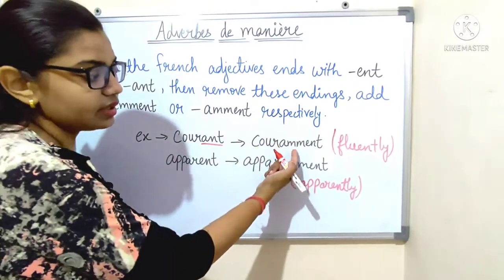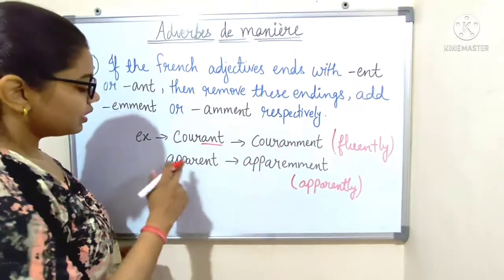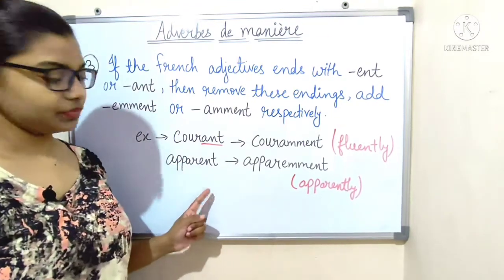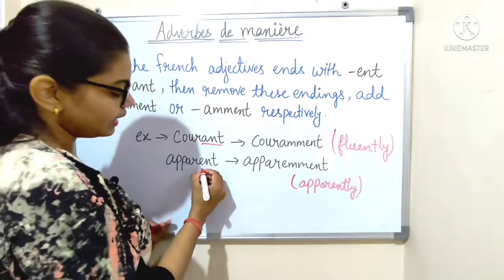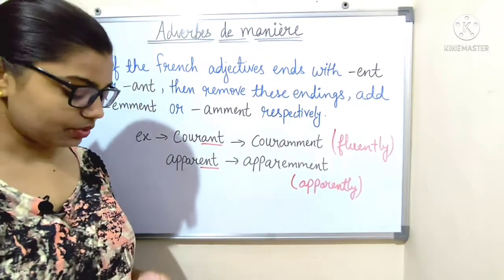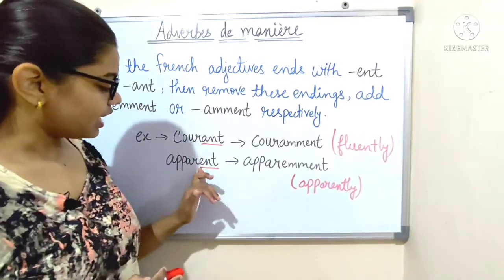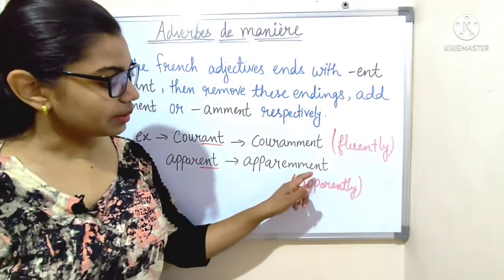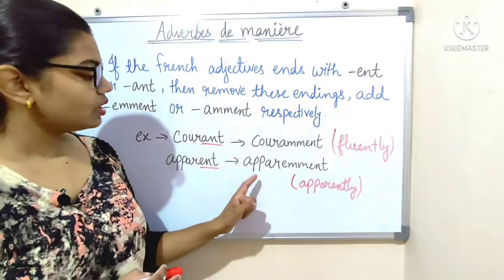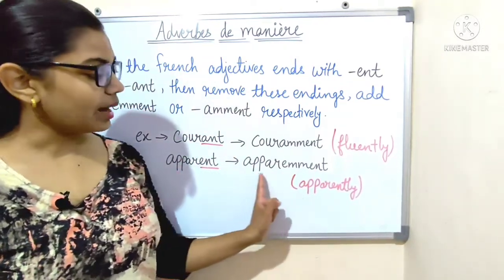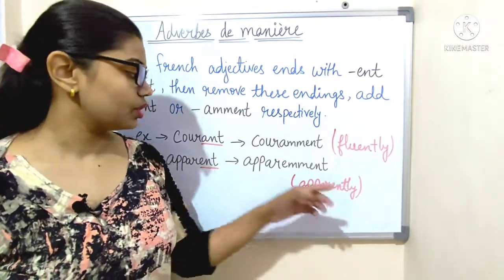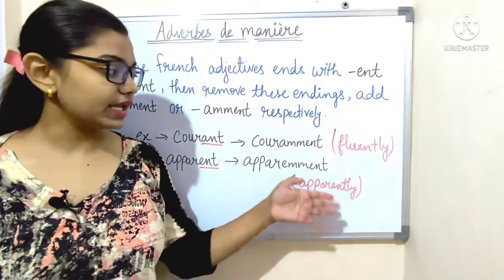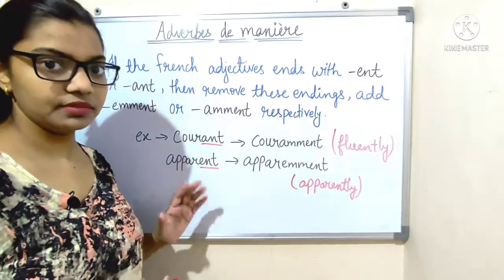Second example for rule three: 'apparent' ends with '-ent', so we remove '-ent' and add '-emment' to get 'apparemment'. This is how we make an adverb of manner from a French adjective.